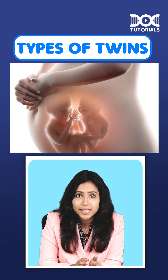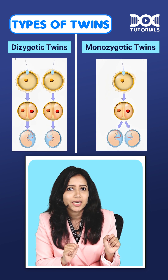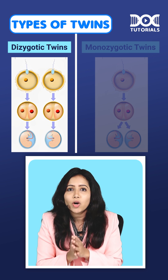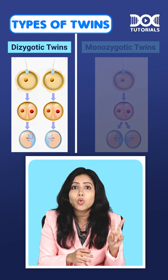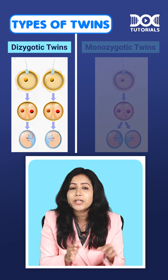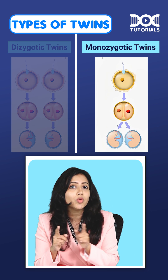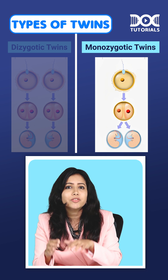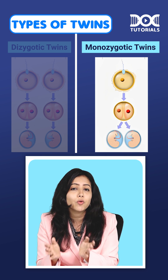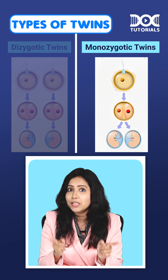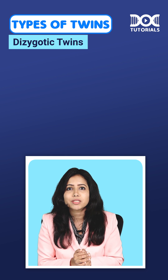Twins can be either dizygotic or monozygotic. Dizygotic means there are two zygotes — two ovum fertilized by two separate sperms. Whereas in monozygotic, there is just one zygote which splits to form the twins. Among these two, the most common is dizygotic twins.